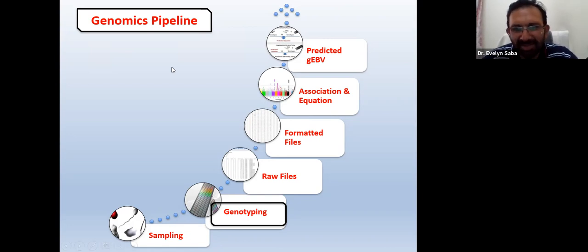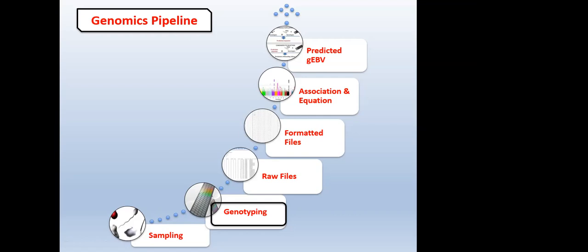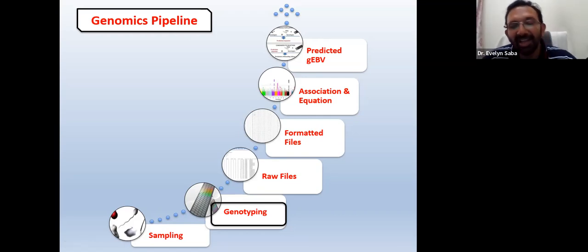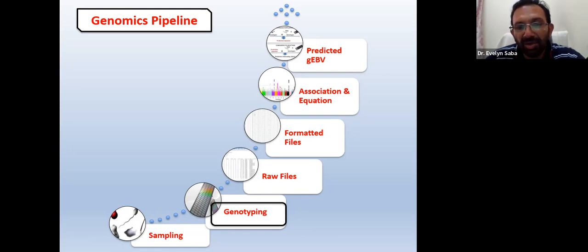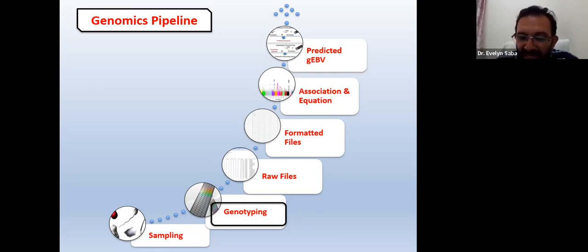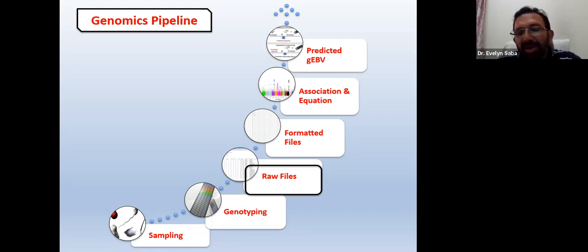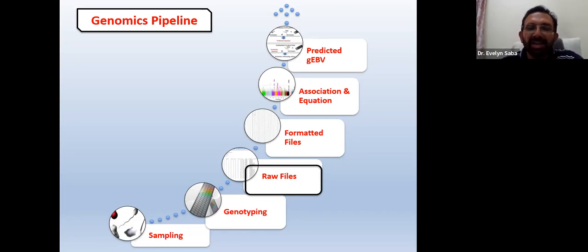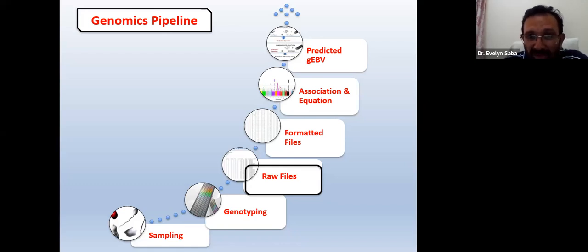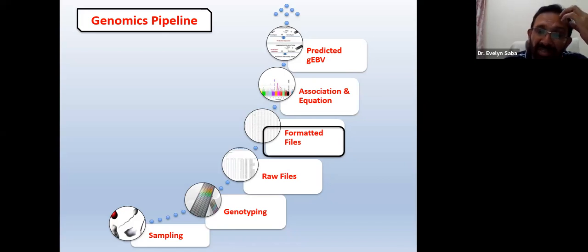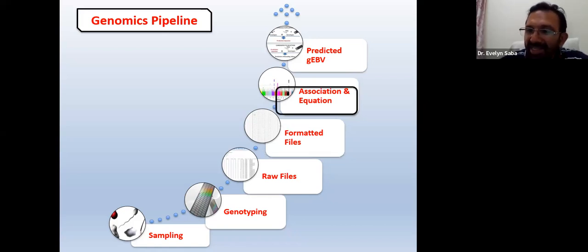Can you hear me again? Yes sir, we can hear you. Sorry — internet interruption. We are back on track. Genomic pipeline — I was just telling you about the sample. After sampling, we go for the genotyping. Mostly we go for commercial options because this is very costly at the institutional level. Then a company gives you the raw files. Once you give your DNA sample or tissue sample, they will extract DNA, genotype it, and give you the physical data — that's the raw files. Those raw files are processed with specialized software to convert them into a specific format for analysis. The next step is the association analysis and its equation.